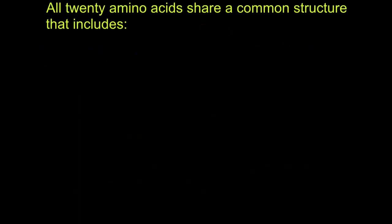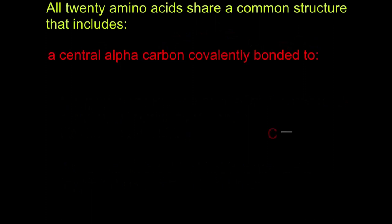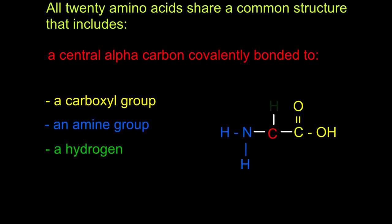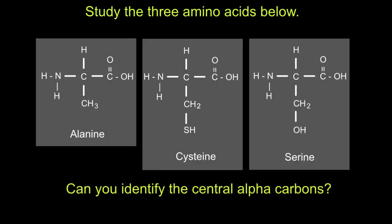All 20 amino acids share a common structure that includes a central alpha carbon covalently bonded to a carboxyl group, an amine group, a hydrogen, and a variable R group. Study the amino acids below — can you identify the central alpha carbons?